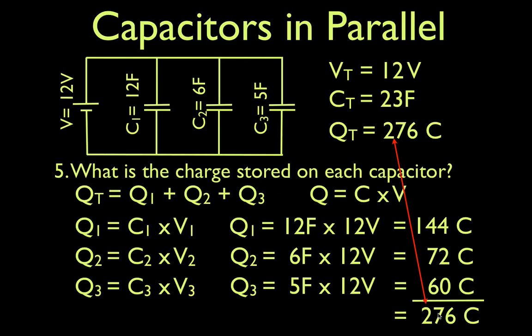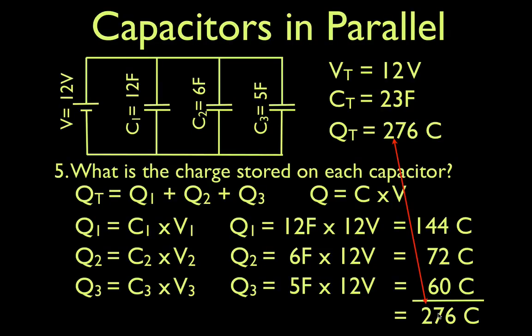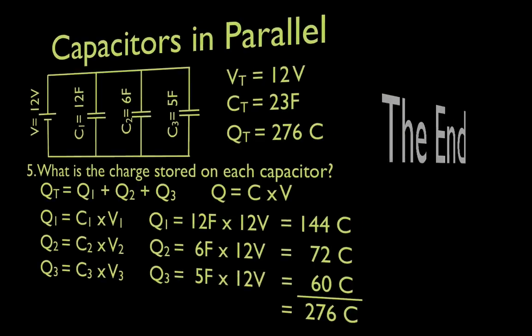So that is it. First we got the total voltage, then the equivalent capacitance, then the total charge, then the potential difference across each capacitor, and then the charge stored on each capacitor. I think we even did that in under 10 minutes. Thank you very much for watching. If you found that helpful, leave a thumbs up or a comment in the comment section below.